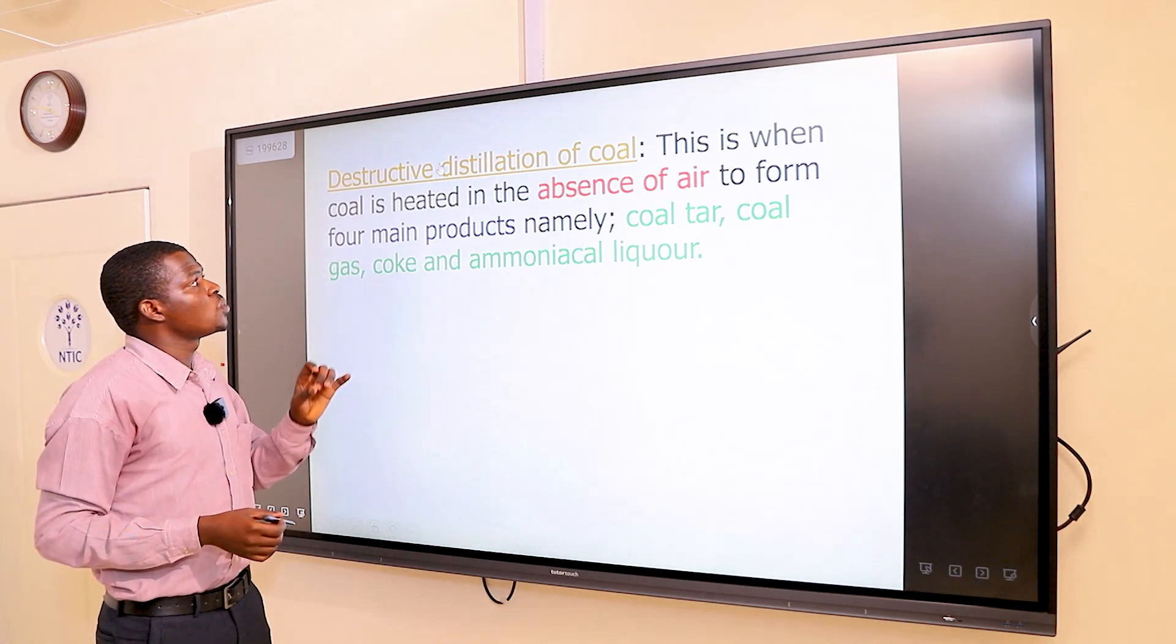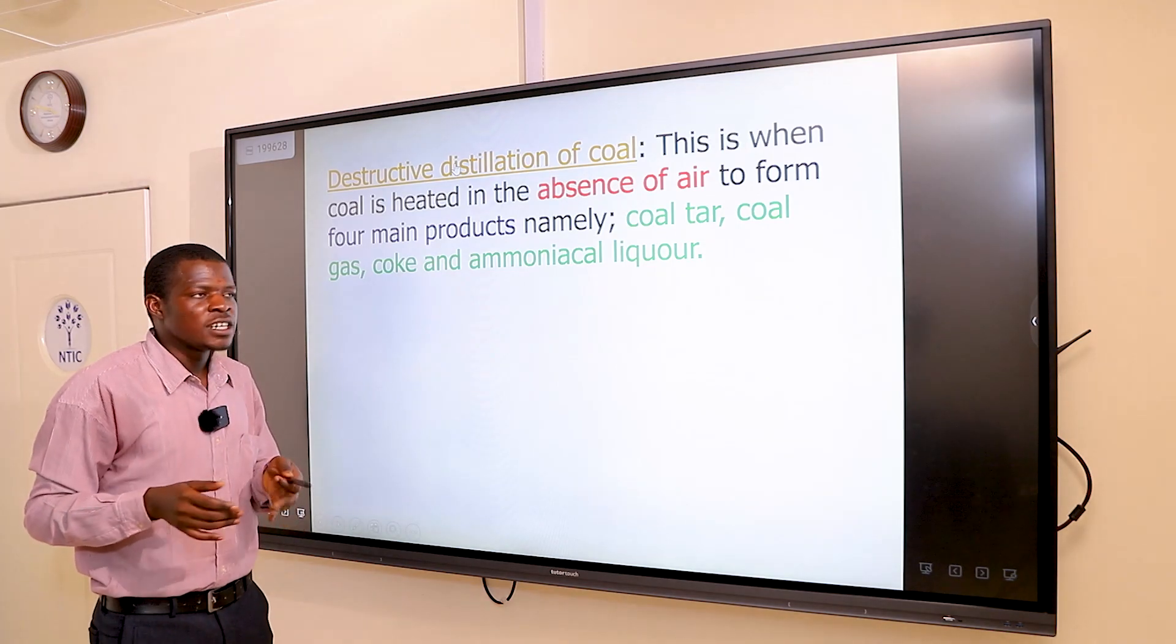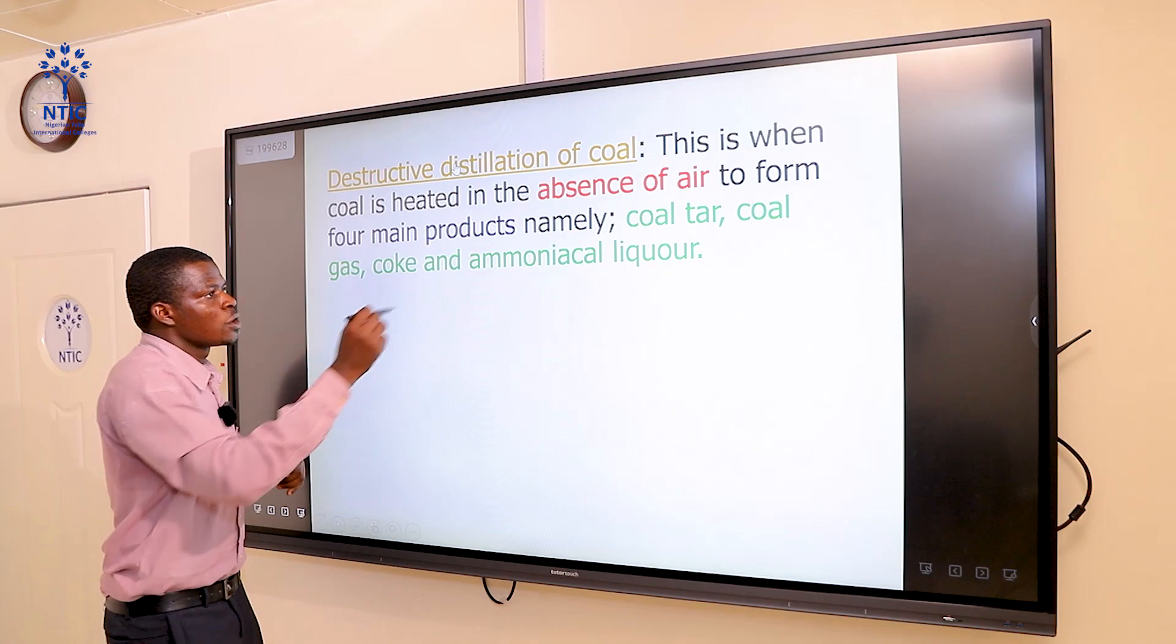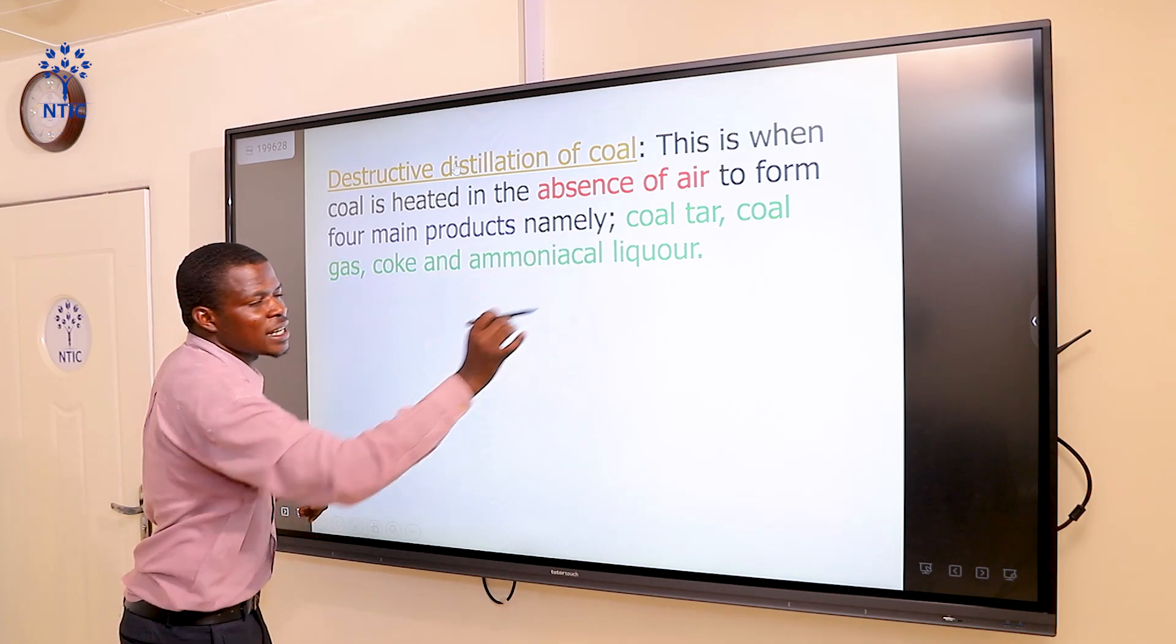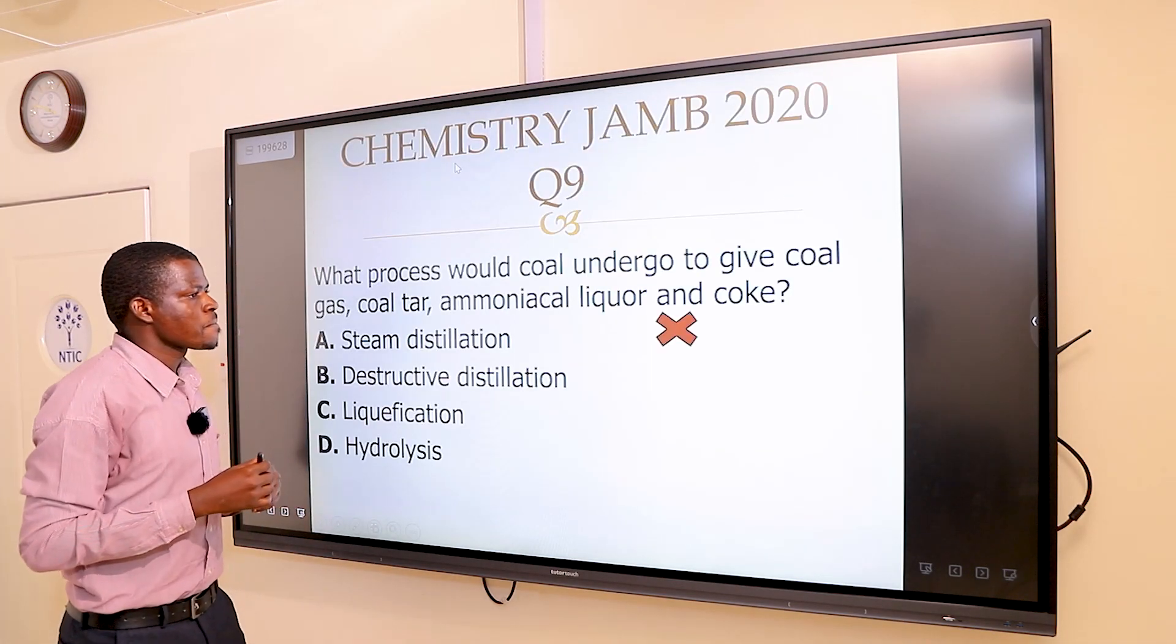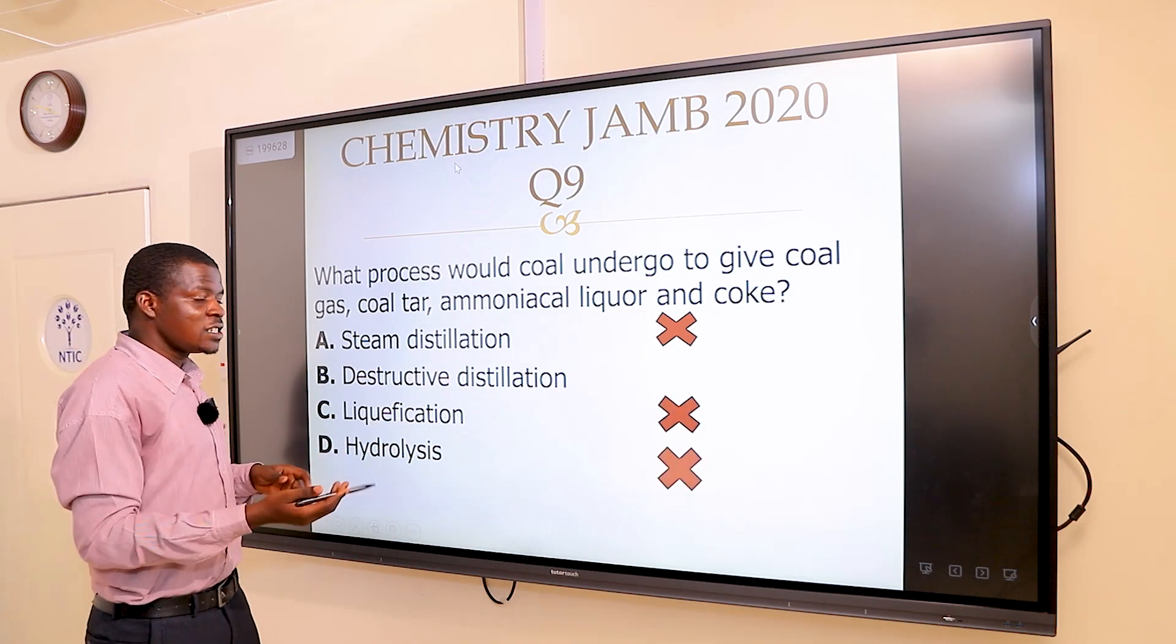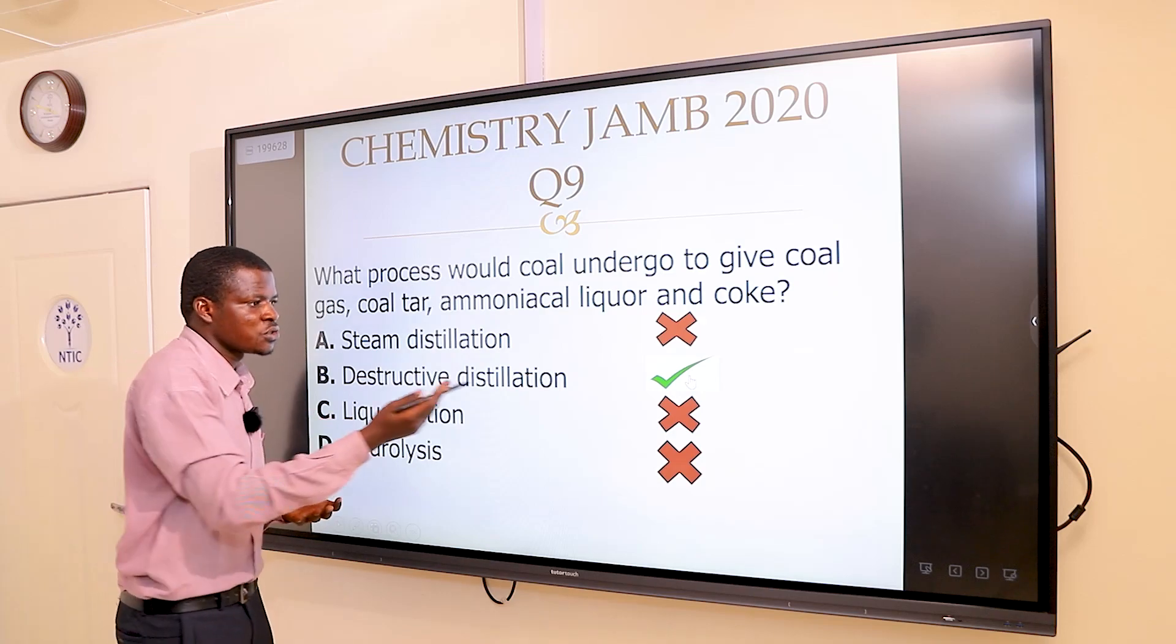Destructive distillation of coal is when coal is heated in the absence of air to form four main products: coal tar, coal gas, coke, and ammoniacal liquor. A is wrong, C is wrong, D is wrong. Obviously, the correct answer must be option B, destructive distillation.